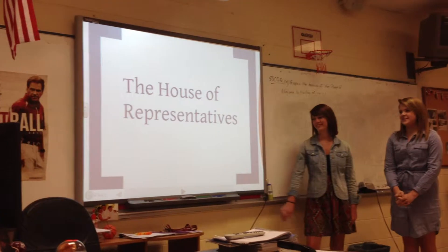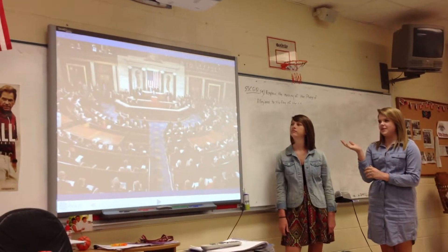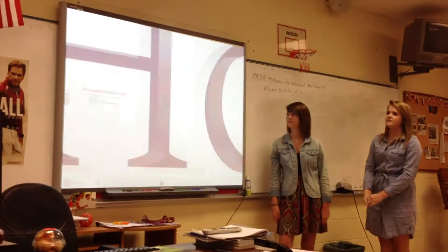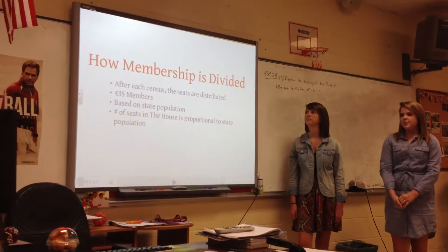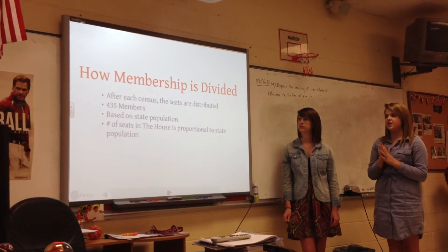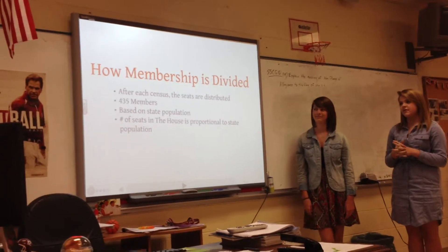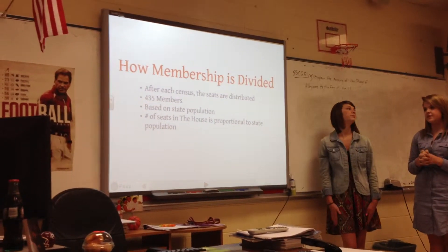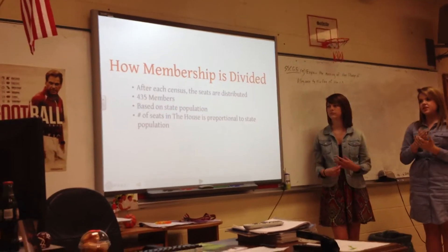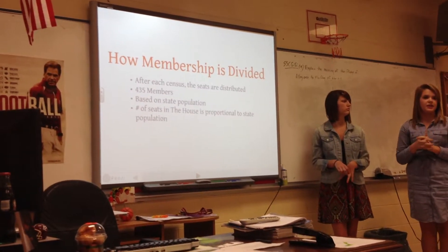The House of Representatives. This is a picture of where they meet at the House of Representatives. How membership is divided — after each year, the seats are distributed based on the number of people who live in each state. There's a total of 435 members in the House of Representatives, and it's proportional to the state population. Each year, the 435 members are distributed based on how many people live in each state.